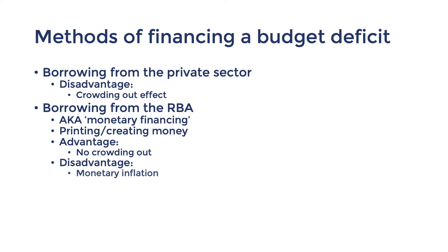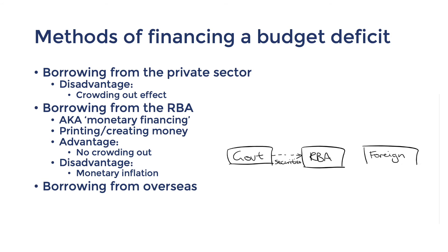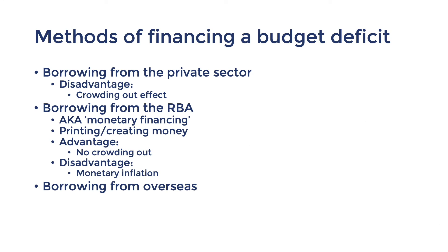A third way of financing a budget deficit is by borrowing from overseas financial markets. The federal government gets the RBA to sell the government's securities in overseas markets for foreign currency. The RBA holds this foreign currency in its reserves and gives the equivalent amount in Australian dollars to the federal government. The advantage is that it avoids issues such as the crowding out effect and monetary inflation. However, the disadvantage is that it is effectively borrowing from overseas, and therefore will impact foreign debt levels and external stability.